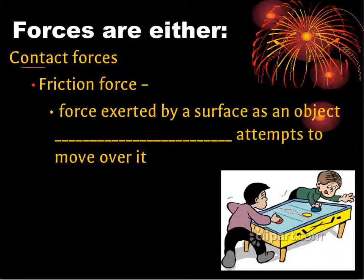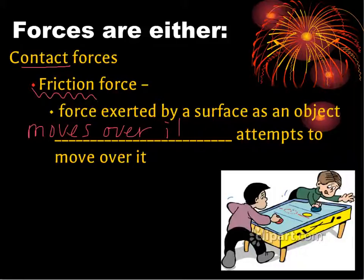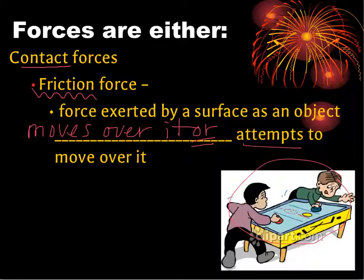This contact force is a force that occurs when it comes in contact with an object. Friction force is a common one of those contact forces - a force exerted by a surface as an object moves over it, or sometimes attempts to move over it. For example, here we've got the air hockey table. As these guys try to play air hockey without turning it on, they're really struggling to move the puck because of the friction between the puck and the rink table.